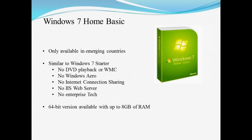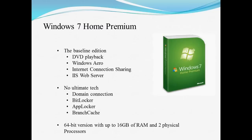The next version is Windows 7 Home Basic. This is primarily designed for emerging countries to keep the cost down. It is similar to Windows 7 Starter — there is no DVD playback, no Windows Media Center, no Windows Aero, no Internet Connection Sharing, no IIS web server, and no Enterprise Tech. However, with this version there is also a 64-bit version with a maximum of 8GB of RAM.